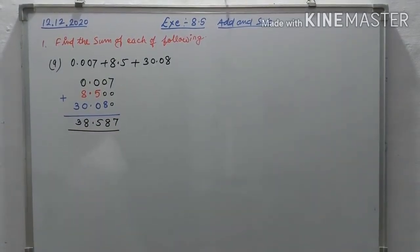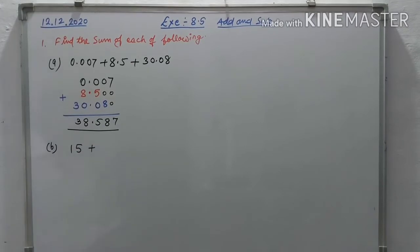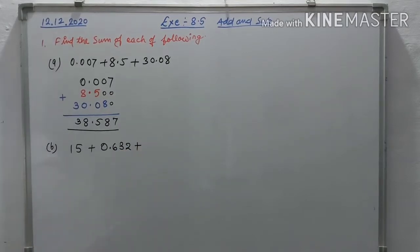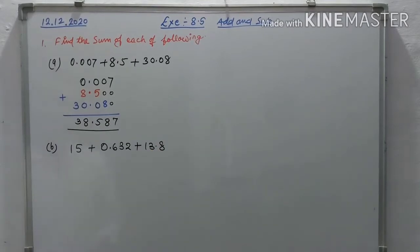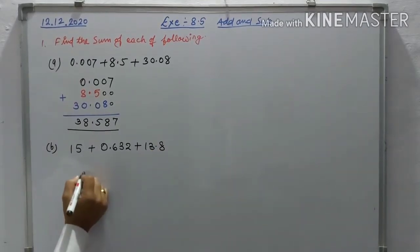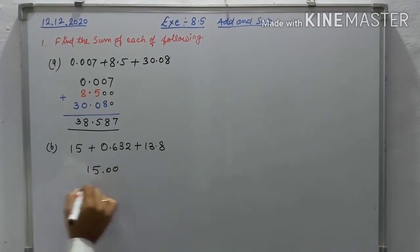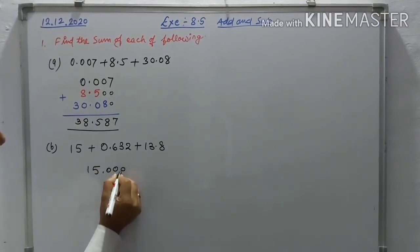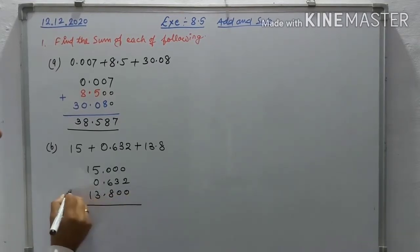The second question (b) is 15 plus 0.632 plus 13.8. Write 15 first — after 15 put zeros as needed. Second is 0.632, and third is 13.800. Now add them.